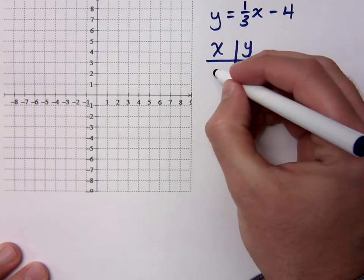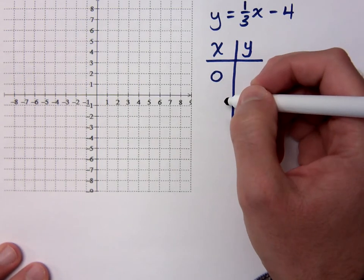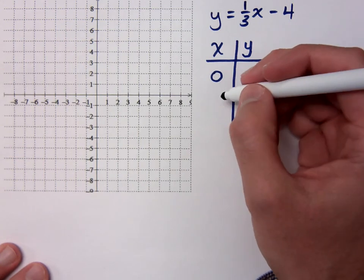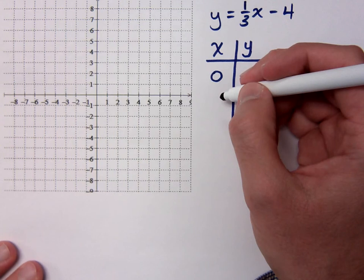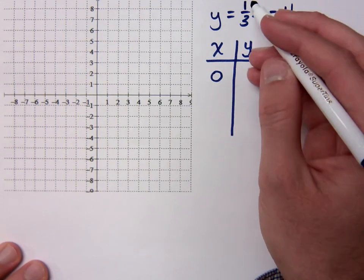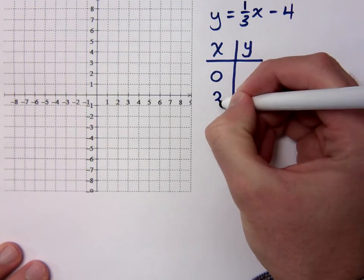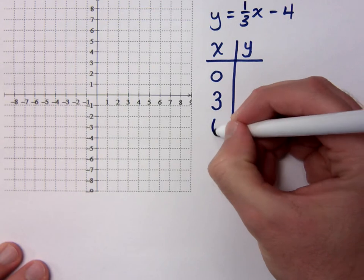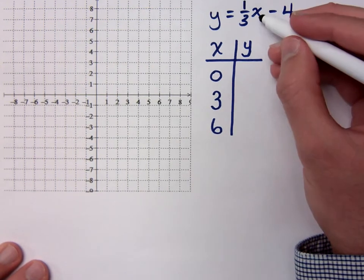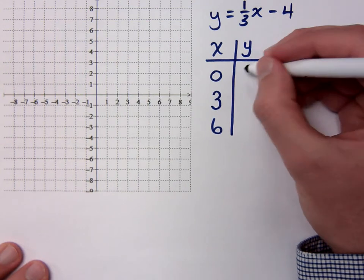Plugging in 0 is almost always a good choice. What would be another good number to plug in here? 3 — because 3 times 1 over 3 would reduce nicely. So if I plug in 3, maybe I'd plug in 6 as well. If I plug in 0, one third of 0 is still 0, minus 4, so I get negative 4.